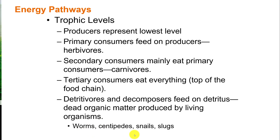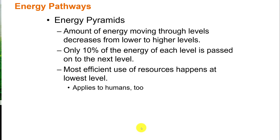Our often considered lowly — but if you're a biologist, sometimes beloved — worms, centipedes, snails, slugs, bacteria, and fungi all serve as detritivores. There is inefficiency in an energy pyramid because as you move through the levels, the amount of energy available decreases. With each level, only 10% of the energy is passed from one level to the next. The most efficient use of resources happens at the lowest level.